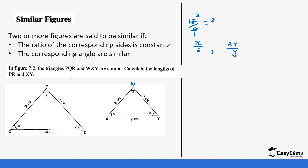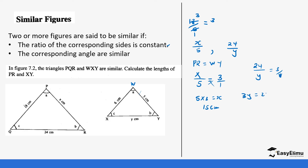So if you want to get the value of X, remember PR equals WY. That's why X over 5 centimeters should give you the same ratio of 3 over 1. When you cross multiply, you get 5 times 3 equals X, which gives you 15 centimeters. The same for 24 over Y: 24 divided by Y equals 3 over 1, so 3Y equals 24, divide by 3, and Y equals 8 centimeters. So if you have the ratio of the sides that are similar, you are able to find unknown values.